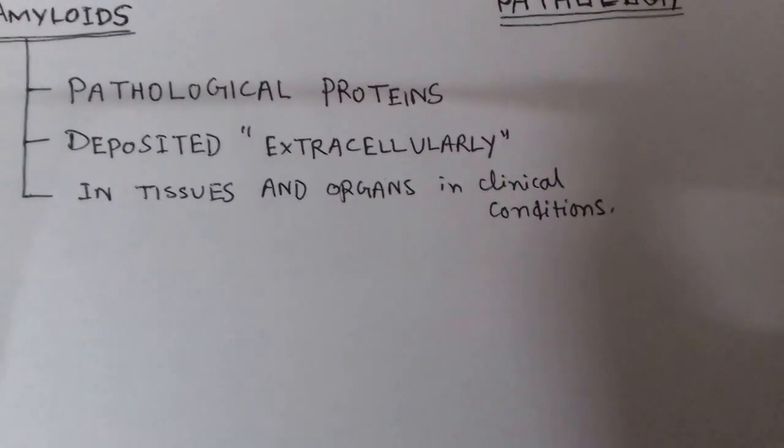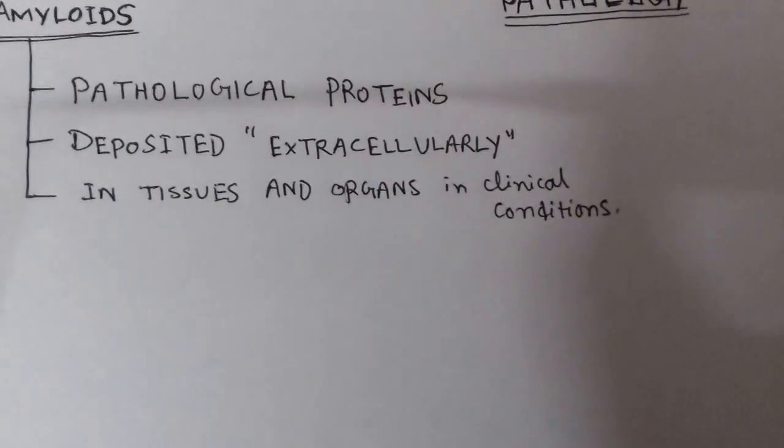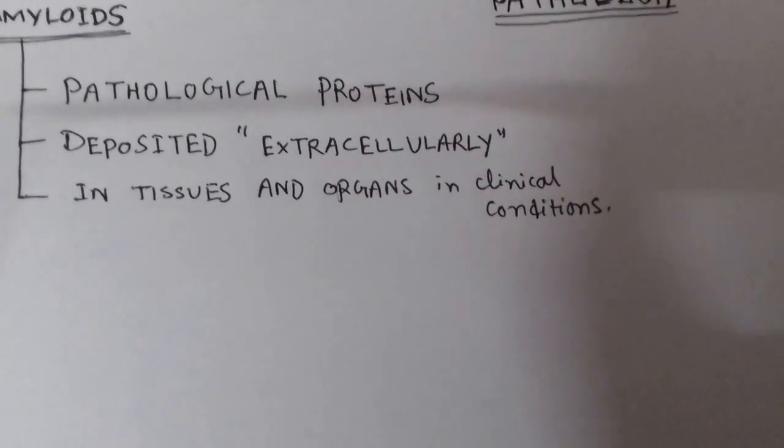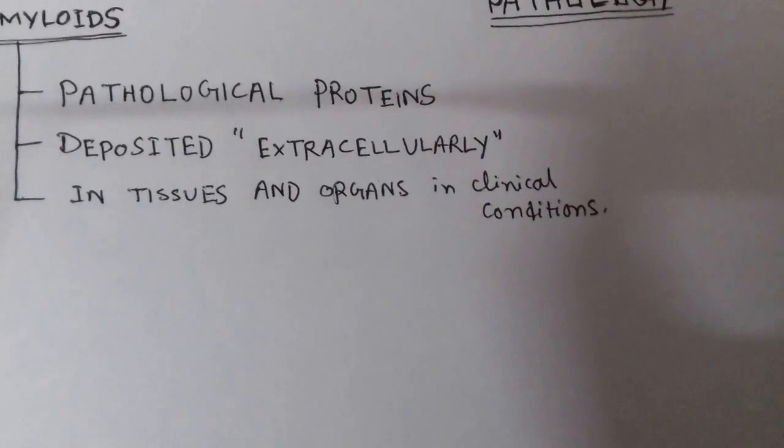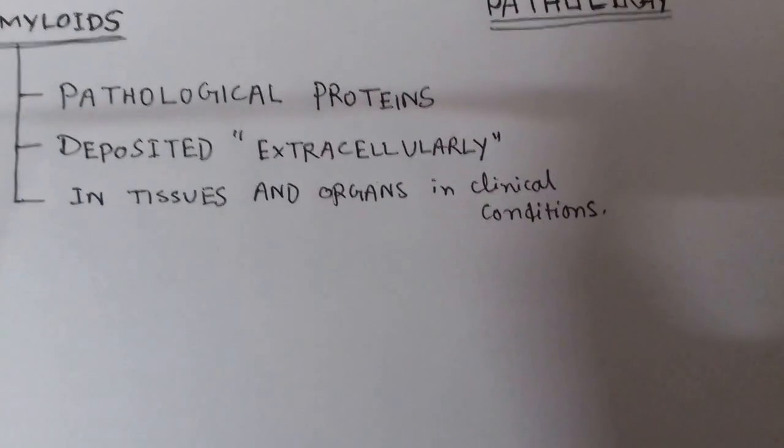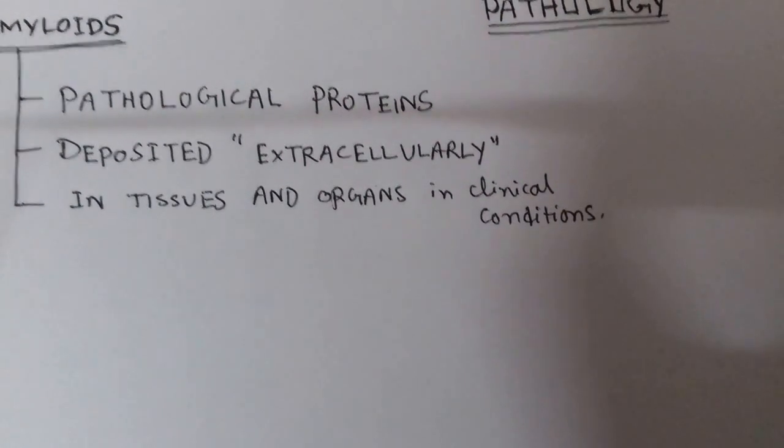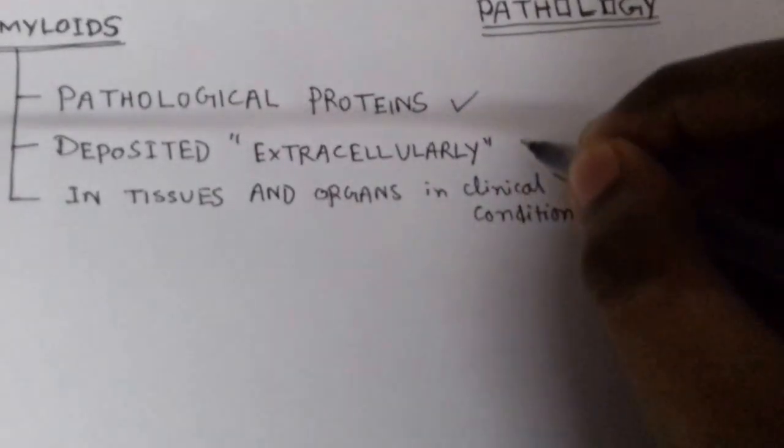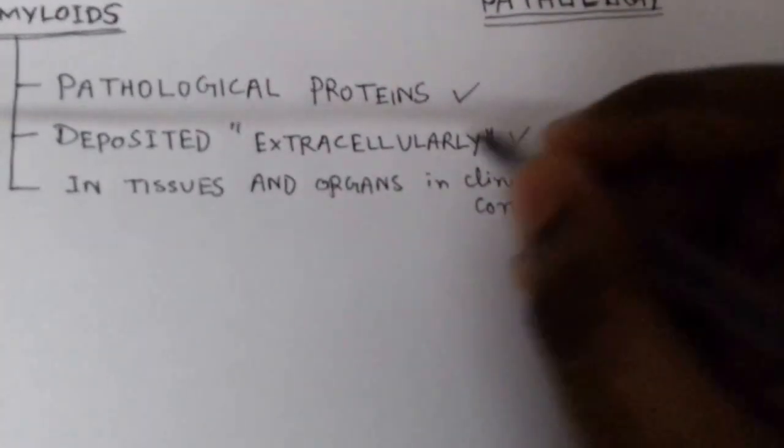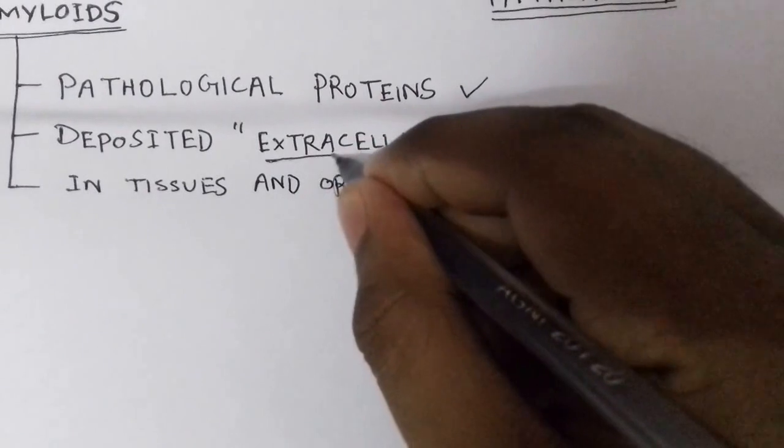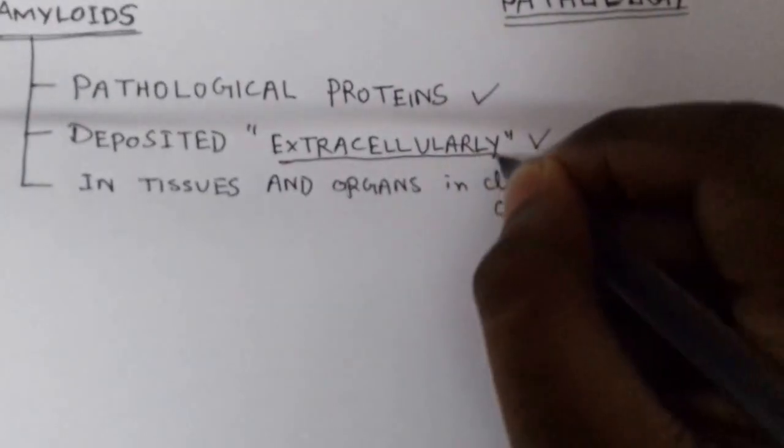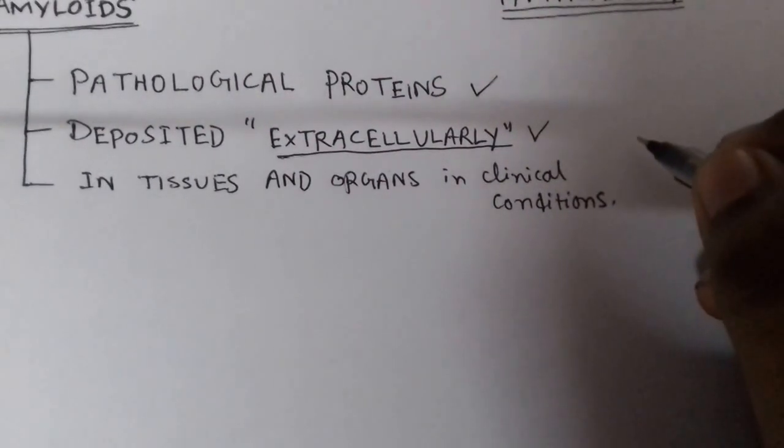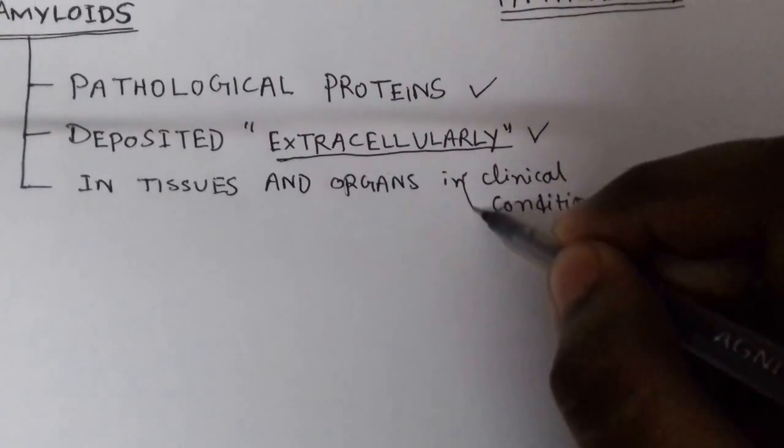Amyloids are pathological proteins. They are not physiological, meaning in abnormal or disease conditions only they are synthesized or created. They are deposited extracellularly in tissues and organs in clinical conditions.